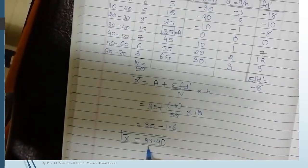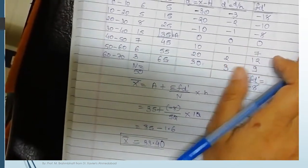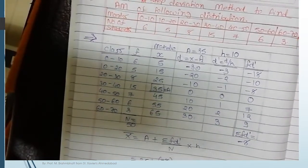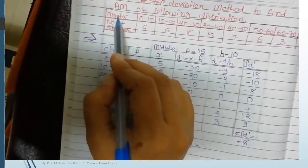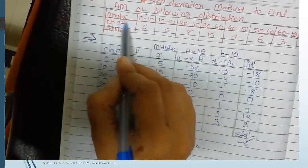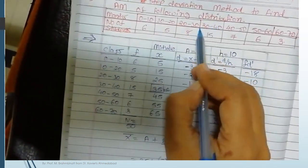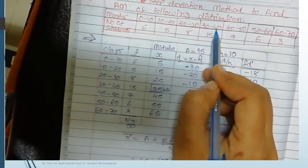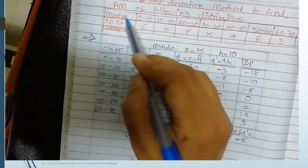Check the answer against the question: 33.40 lies within the 30 to 40 class interval, which confirms the result is reasonable. So x-bar equals 33.40.